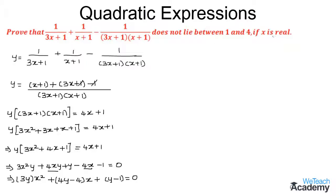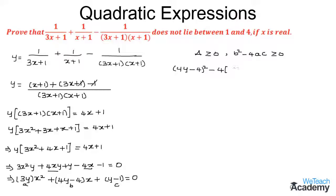Given that x is real, the discriminant value must be greater than or equal to 0. The discriminant is b² - 4ac ≥ 0. From this quadratic equation, a = 3y, b = (4y - 4), and c = (y - 1). Substituting these values: (4y - 4)² - 4·3y·(y - 1) ≥ 0.